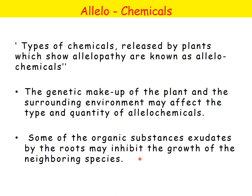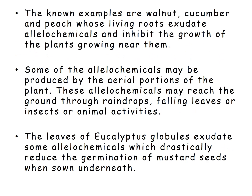The chemicals released by plants which show allelopathy are known as allelochemicals. The genetic makeup of the plant and the surrounding environment may affect the type and quantity of allelochemicals. Some organic substances exuded by the roots may inhibit the growth of neighboring species. Known examples are walnut, cucumber, and peach, whose living roots exude allelochemicals and inhibit the growth of plants growing near them.